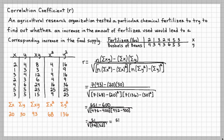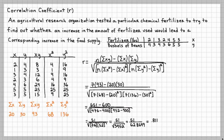The square root of 3952 is approximately 62.8649. Performing the division gives you approximately 0.811, which is a very strong correlation — a strong relationship between x and y.